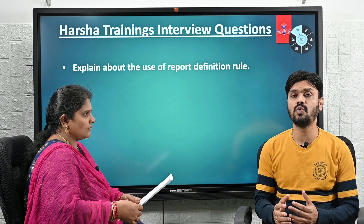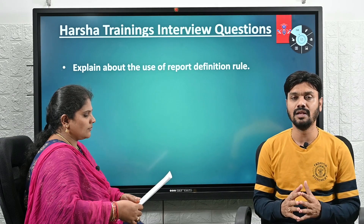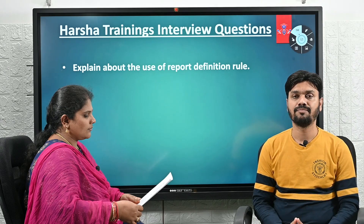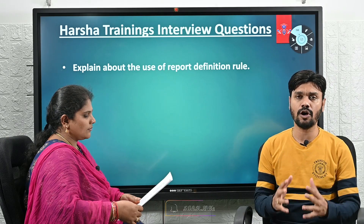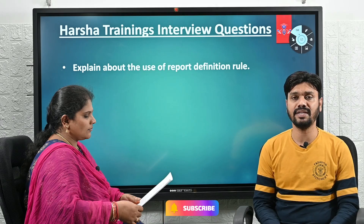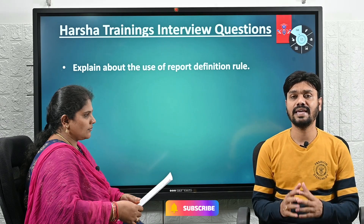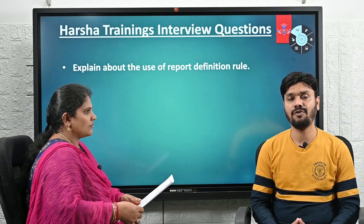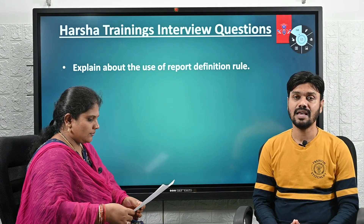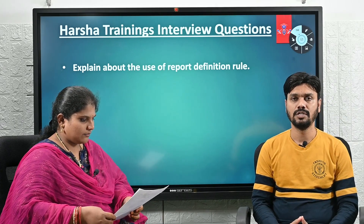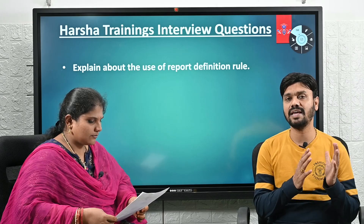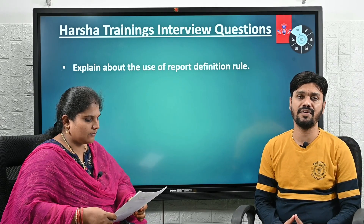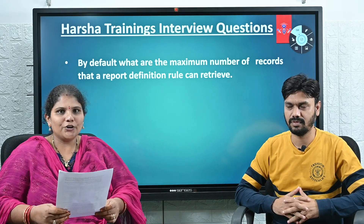Or we want to display the data in the UI. We can display it in two different formats: a list format or a chart format. List format will look like a table; chart format is called a summary format. So we can display in a list format or a summary format using a Report Definition Rule.